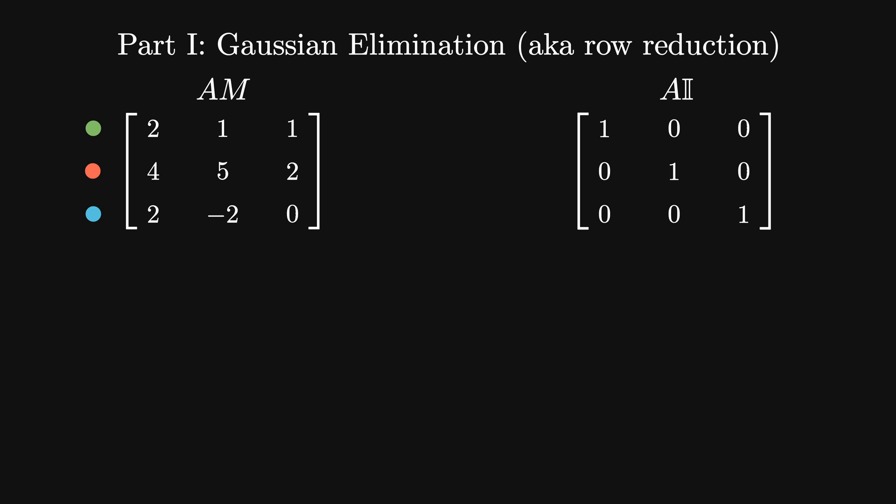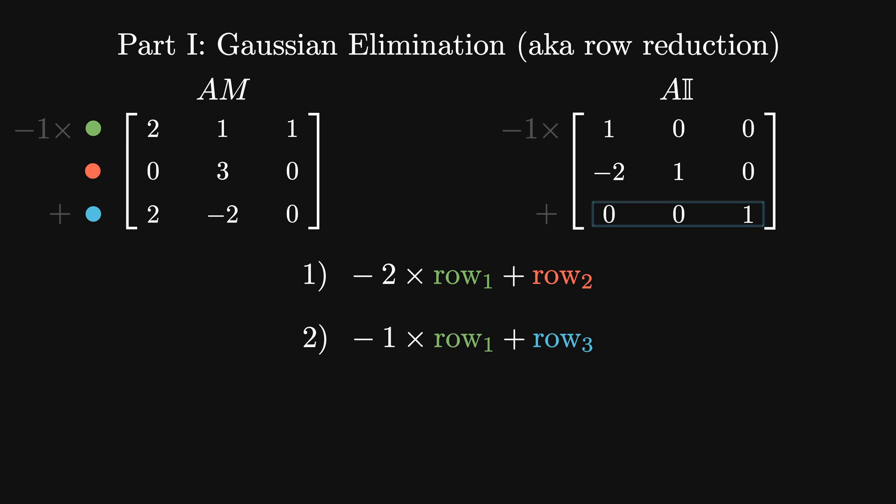We'll start by eliminating the first value of the second row, 4, from this matrix. We can do that by multiplying row 1 by minus 2 and adding it to row 2. That gives us a new row 2 equal to [0, 3, 0]. When I do this to the identity, row 2 becomes [-2, 1, 0]. We'll repeat this for row 3. Now I subtract the first row from the third, which gives me new third rows [0, -3, 1] and [-1, 0, 1].